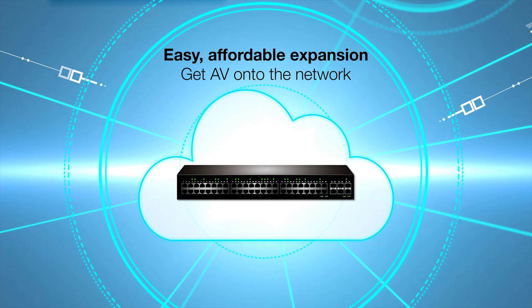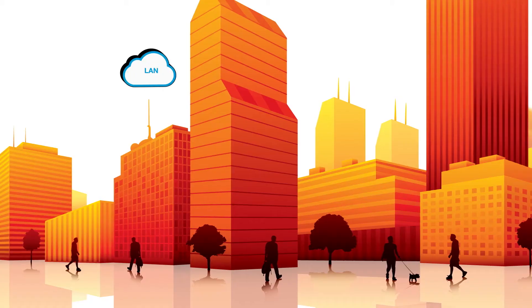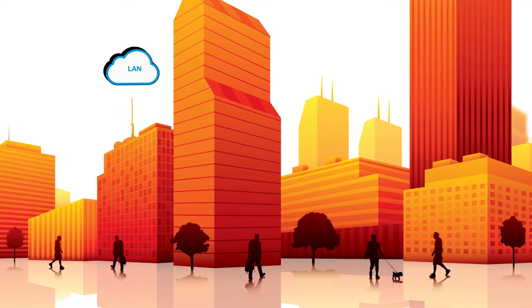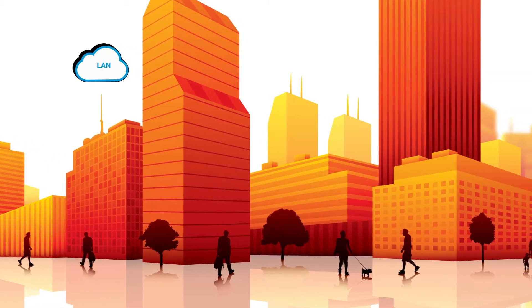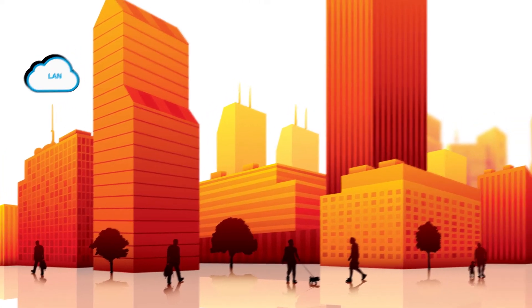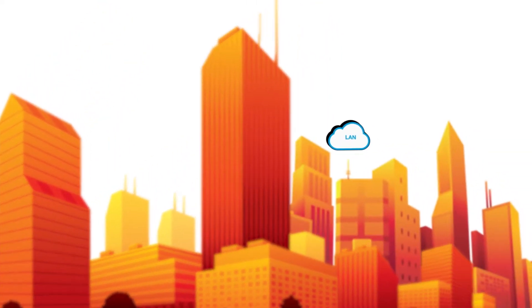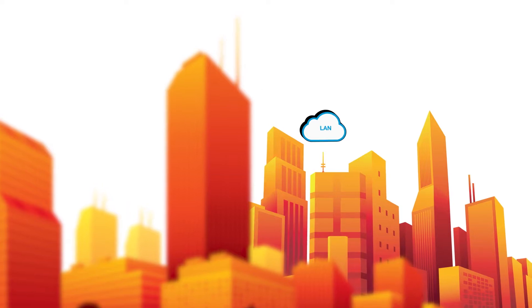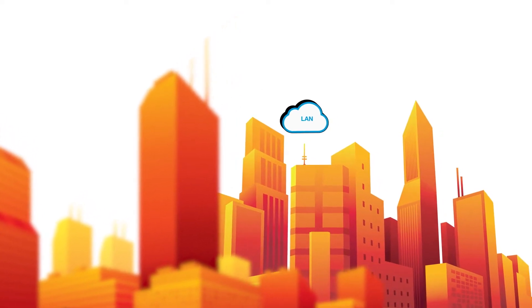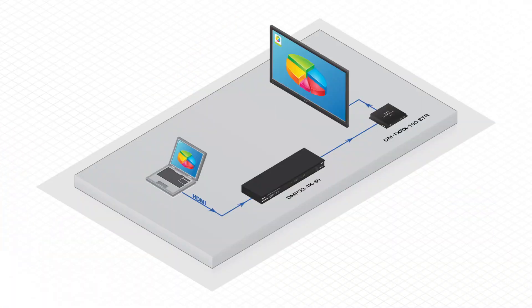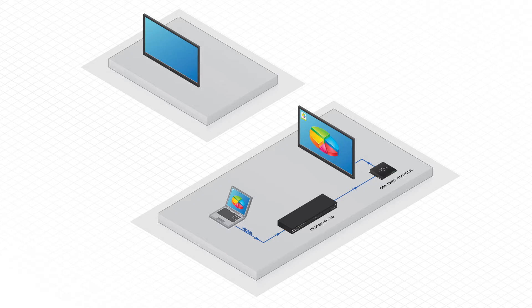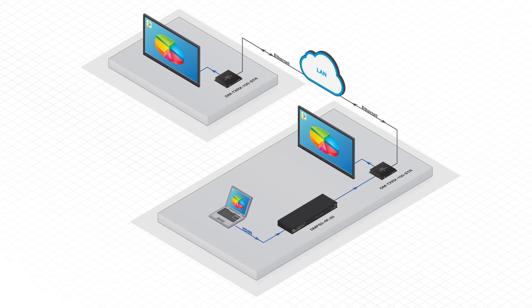Those are very compelling reasons. Now let's take a closer look at how that applies to real-world applications. First, no distance limitations. This makes it easy to distribute AV across buildings, campuses, even geographic regions. So applications such as digital signage or IPTV are ideal. Transmitting content to overflow rooms is another great application, or even to connect classrooms or presentation rooms without needing a traditional AV matrix switcher.